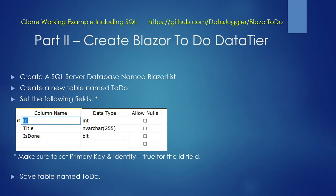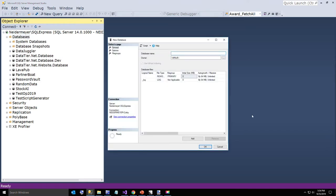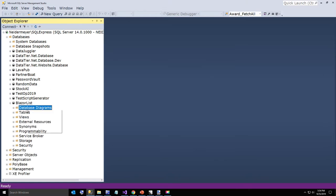Now in part two we're going to create our data tier for the Blazor to-do list project. I listed the URL here of the full working version — if you want to just clone it you can skip creating it, but if you want to walk through creating it we're going to go ahead and do that now. This is a tutorial. So the first step is to create a new database in SQL Server Management Studio named Blazor list.